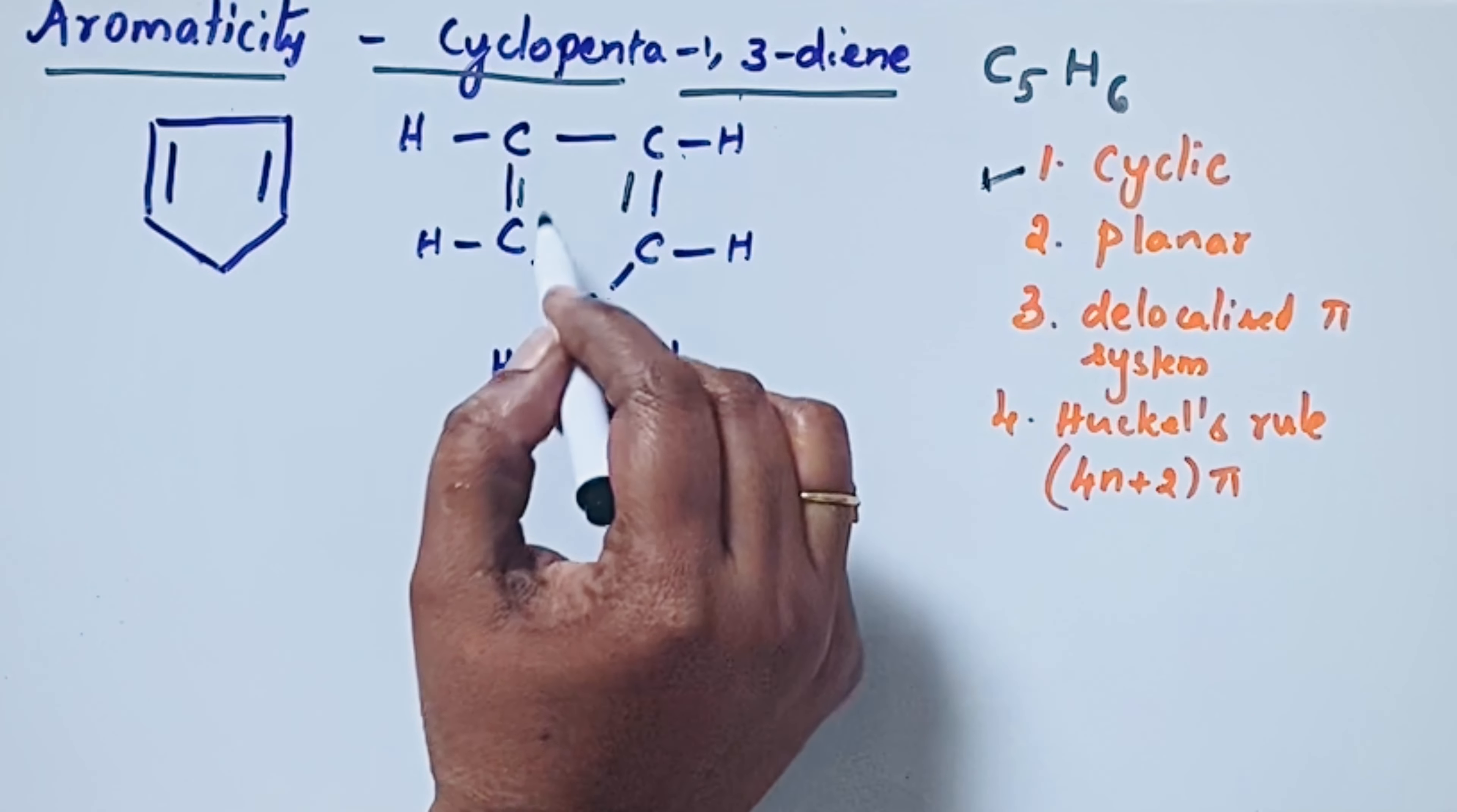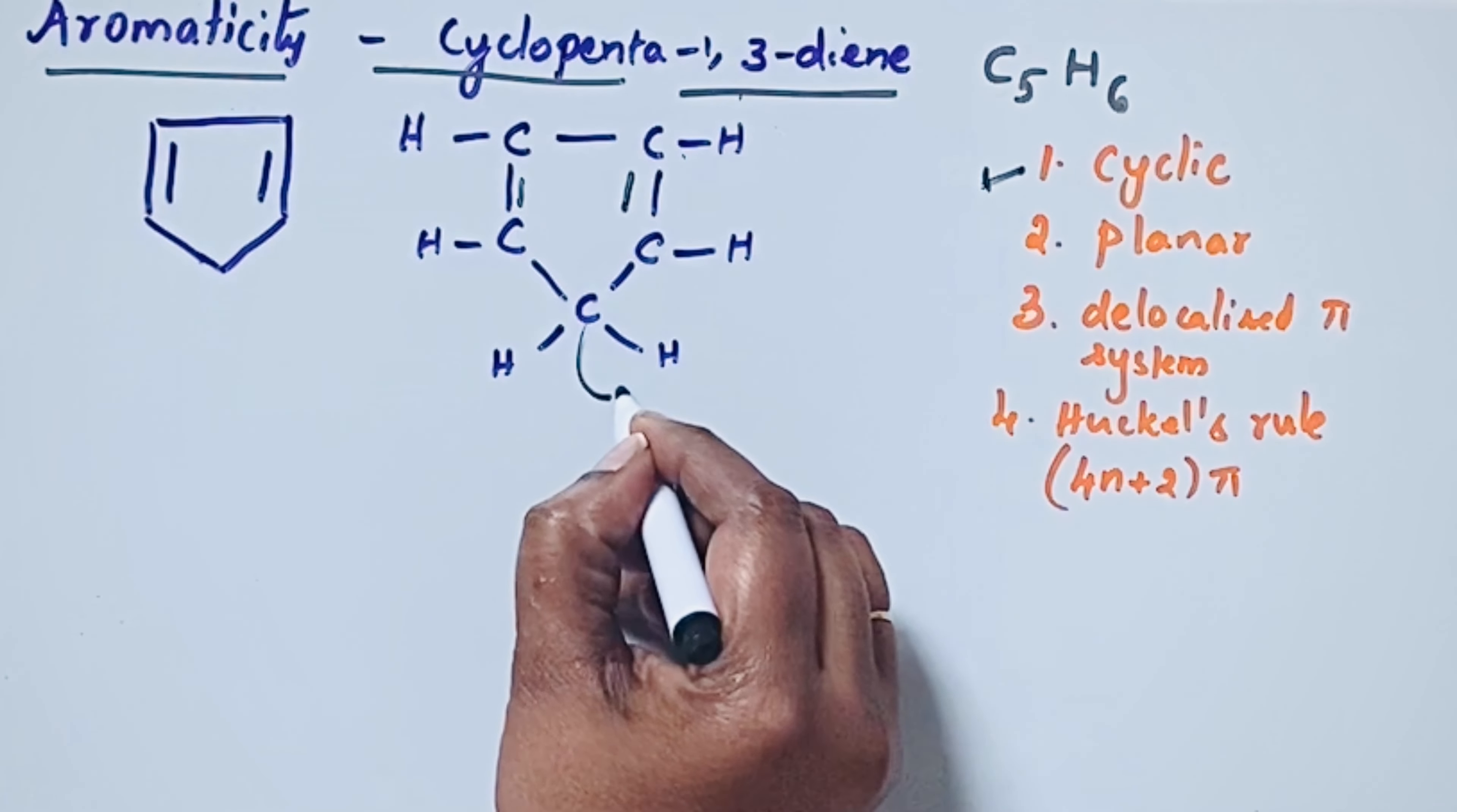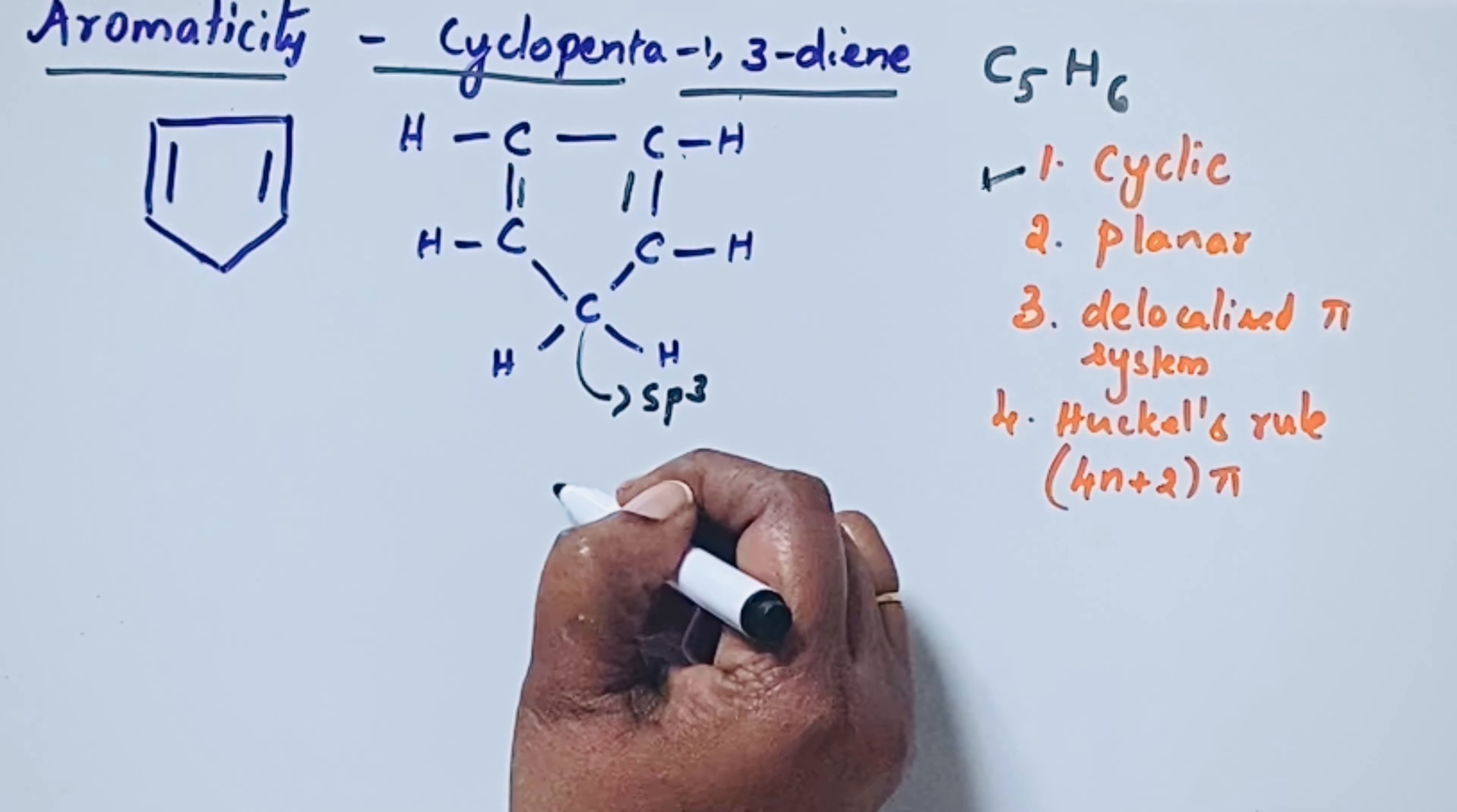But in this compound, this is sp2 and this and this - these four carbons possess sp2 hybridization. But what about this carbon? This is sp3 carbon because it is attached to four other atoms: two carbon atoms and two hydrogen atoms.